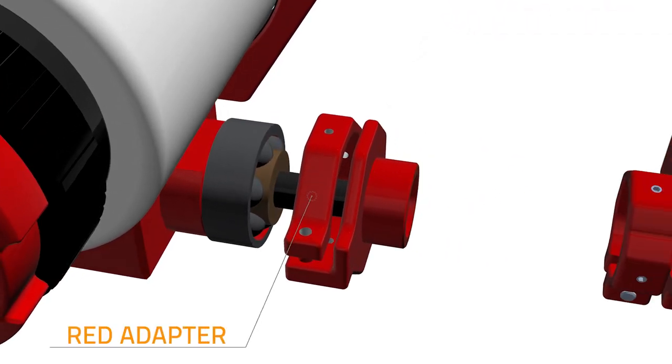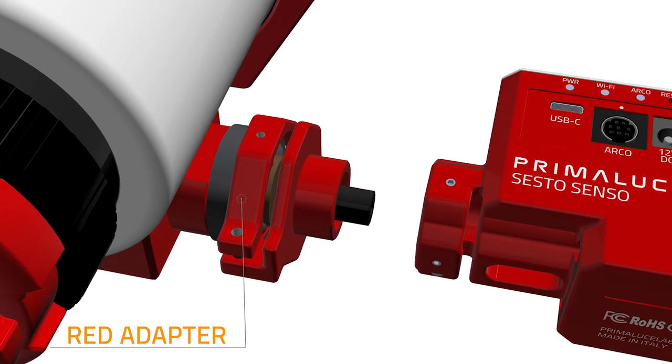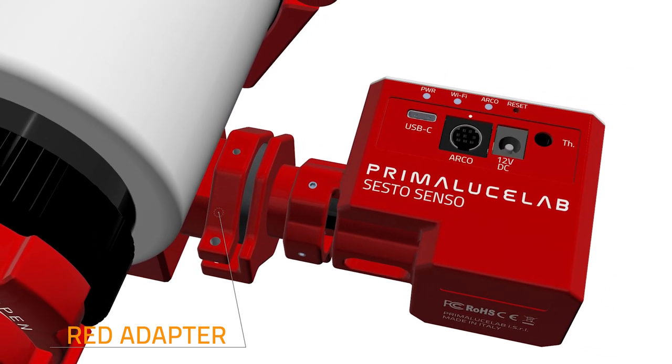Next, connect the red adapter and fix it. This way you will be able to connect Sesto Senso to your focuser and fix it in the same way we did before.